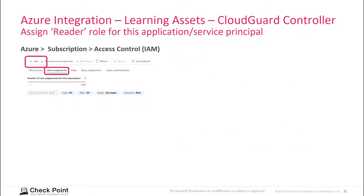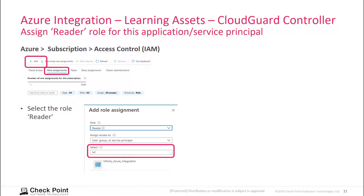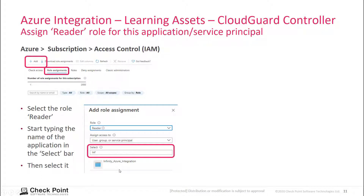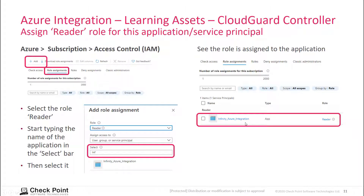We then need to assign a reader role to this application. To do this, we need to search for the application and then select it under the Enterprise Application list. Once we have selected it, we can assign a role — we assign the reader role to this application.